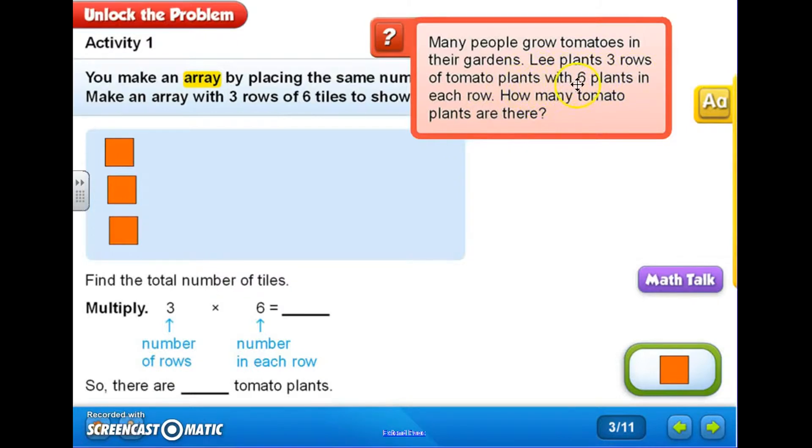The second part of the problem says that there are six plants in each row. So here my number six is the number in each row. That means that I have to put six tiles in each row: five and six.